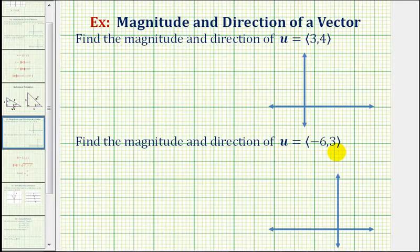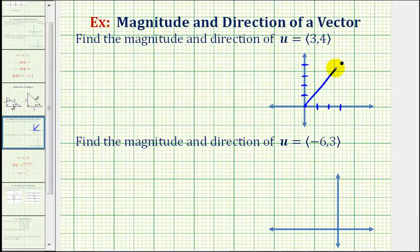For the first example, our vector has an initial point at the origin and a terminal point at the point three, four. The terminal point would be here, so here's our vector. The direction would be this angle here between the positive x-axis and the vector. The horizontal component is three and the vertical component is four.